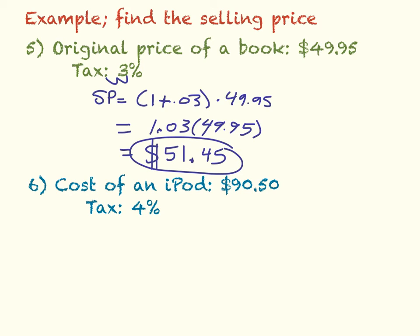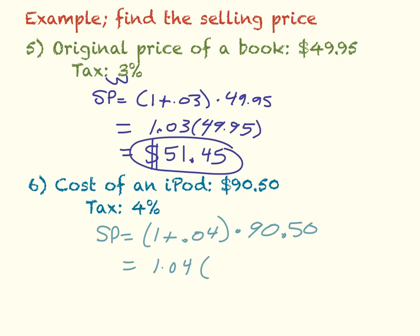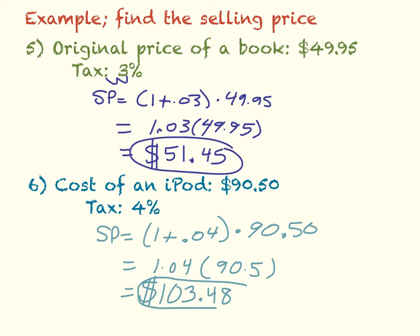The last example: the cost of an iPod is $90.50 with a 4% sales tax. My selling price is going to equal 1 plus 0.04 times $90.50. So 1.04 times 90.5 — when I do that, my selling price is going to be equal to $103.48. That would be your final answer.